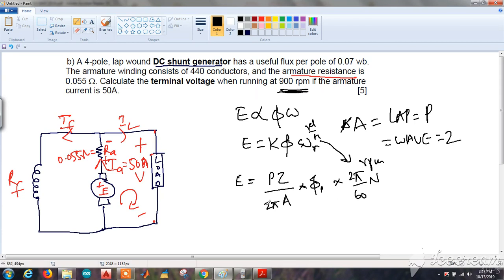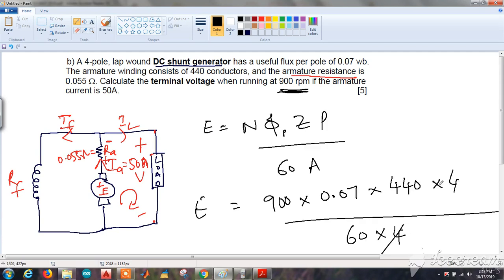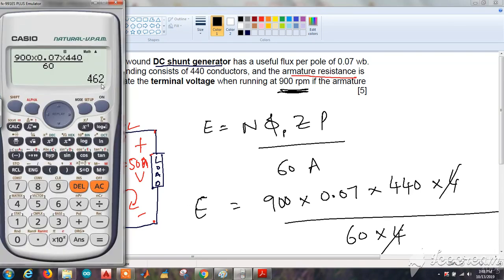The 2 pi cancels out, and the final equation is n phi Z P by 60 A. Let me substitute all the values. The 4s cancel. E equals - calculating in calculator - 462 volts.